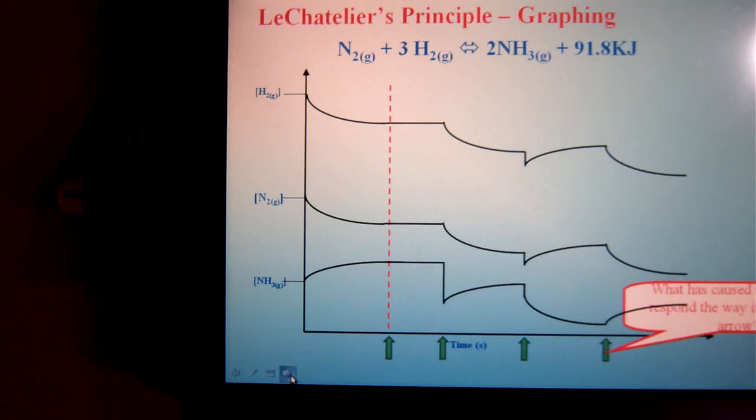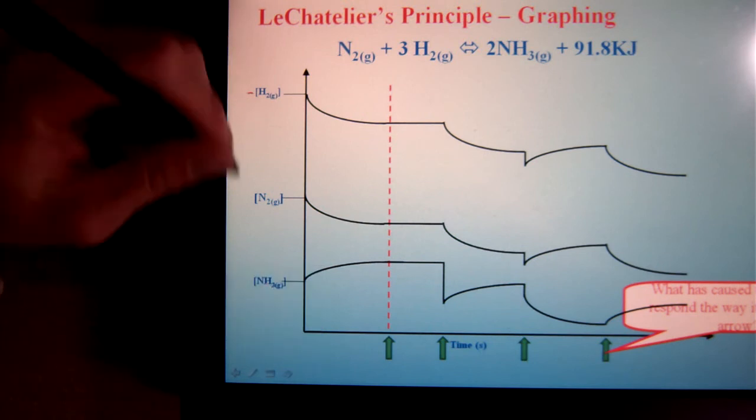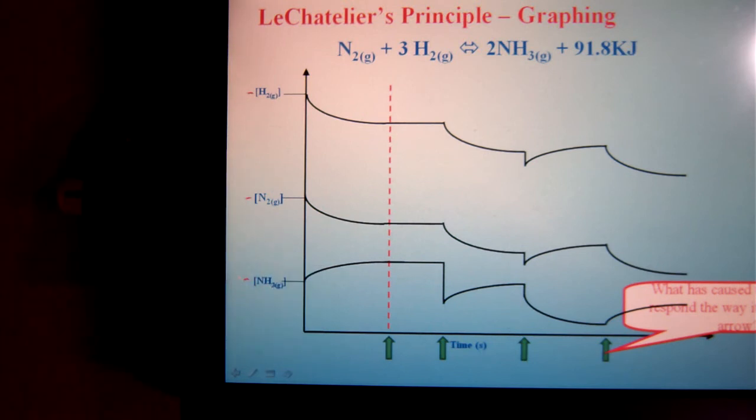You are also expected to analyze Le Chatelier's principle based on graphs. You'll see a number of these examples in your textbook, typically broken off into smaller sections of individual stresses. Essentially what we have here is a graph of the concentration of our reactants and our products versus time.